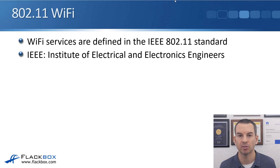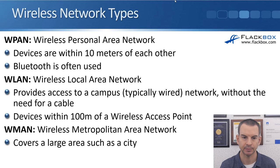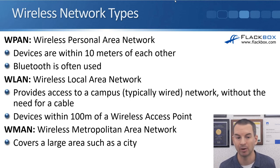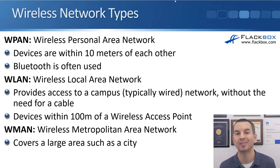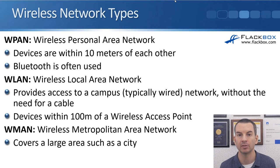Let's get into it from the 802.11 standard, so that's the terminology I'll be using throughout this section. The different types of wireless networks: first up is a WPAN, that's a wireless personal area network. In a WPAN, the devices are very close together — within 10 meters of each other — and Bluetooth is often used for the connectivity here.